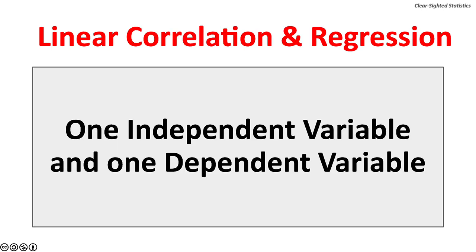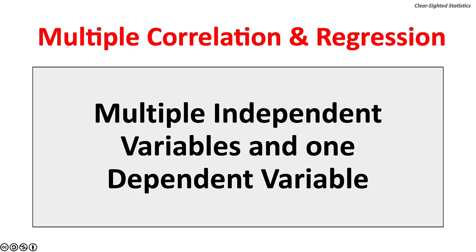Linear correlation and regression uses one independent variable and one dependent variable. Multiple correlation and regression uses multiple independent variables and one dependent variable. Multiple correlation and regression models are far more sophisticated, and most peer-reviewed journals do not publish research based on linear correlation and regression alone.